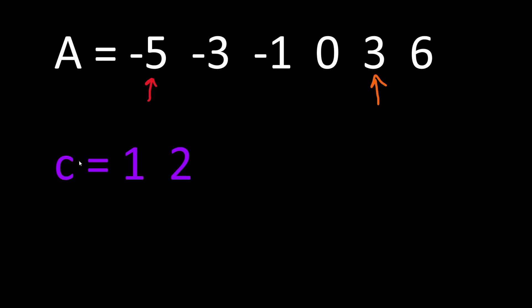At the same time we increment a counter that started with initial value 1, because we have at least one distinct value in the array. Then we have a new distinct value because 3 and the absolute value of minus 5, which is 5, are different — so we can increment up to 2 distinct elements.